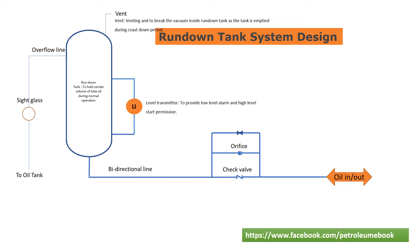The rundown tank holds a certain volume of lube oil during normal operation. The sight glass acts as a visible local indication to ensure that the rundown tank is filled up during filling, and subsequently acts as an indication to ensure that lube oil is under continuous recirculation. The filling valve is normally closed and is opened to fill the rundown tank during each startup.